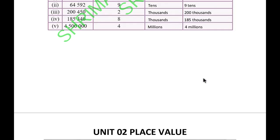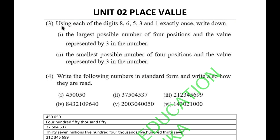Question 3: Using each of the digits 8, 6, 5, 3, and 1 exactly once, write down the largest possible number of four positions and the value represented by 3 in the number. The largest possible number will be 8,653, and the 3 will be in the ones place, representing just 3.